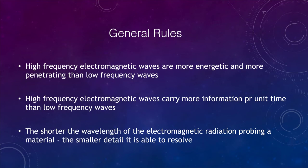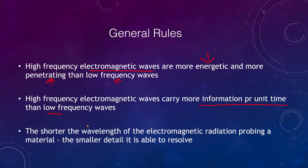High frequency waves are more energetic and more penetrating, so things like x-rays and gamma rays are more damaging than things like radio waves. High frequency waves also carry more information per unit time than low frequency waves. The shorter the wavelength of the electromagnetic radiation, the smaller the detail you can resolve. So if you have a very short wavelength radiation, you're able to see far more detail than with a longer wavelength — gamma rays and x-rays give more detail than radio waves.